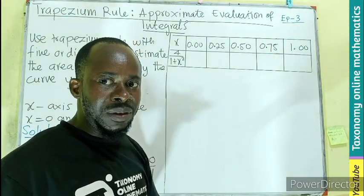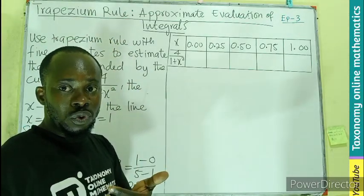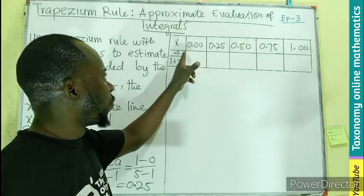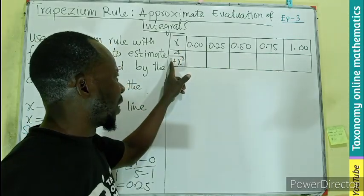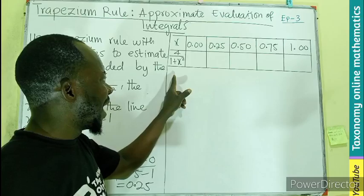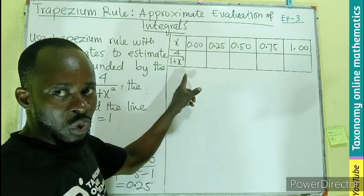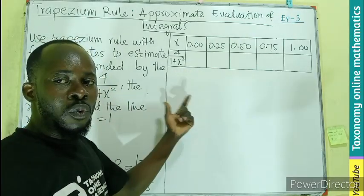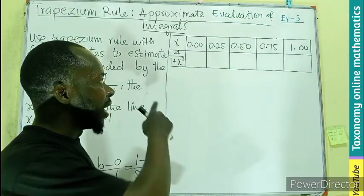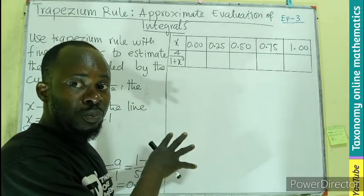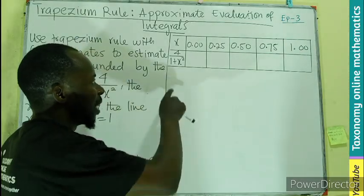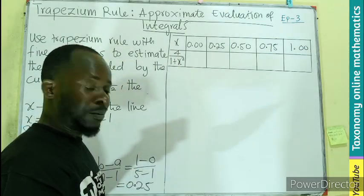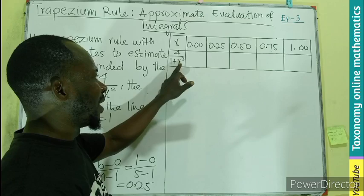Now to calculate y values, there are two ways you can do this. You can write separate columns for the components, but I'll prefer to do it all together because of the space on the board. So I'm putting 4/(1 + x²) in the calculator, then I'll be changing